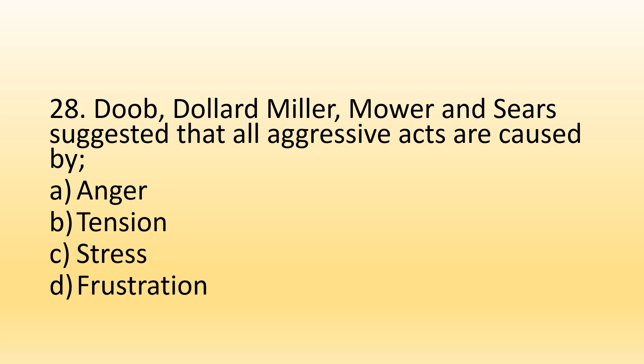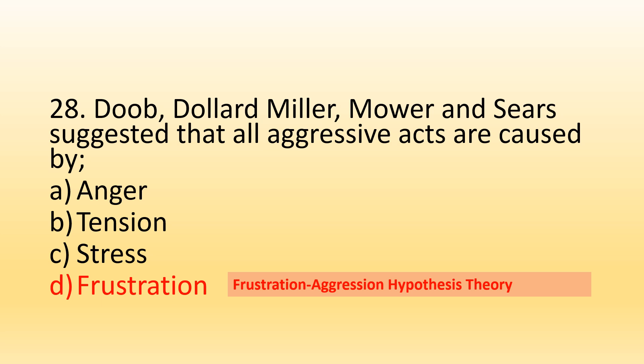Number 28. Doob, Dollard-Miller, Mower, and Sears suggested that all aggressive acts are caused by: Option A, Anger; Option B, Tension; Option C, Stress; Option D, Frustration. The right option is D, Frustration. Doob, Dollard-Miller and colleagues introduced the frustration-aggression hypothesis theory. According to this theory, when a person has aggression, its cause is frustration — specifically, when a person is blocked from achieving their goal, that is called frustration, and frustration causes aggression.